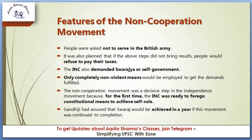Gandhiji had assured that Swaraj would be achieved in a year if this movement was continued to completion. He said that within one year, Swaraj would be achieved if the movement was carried out continuously to its goal.